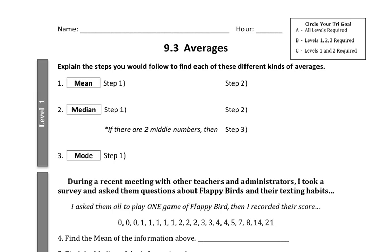What we're going to do now is we're going to try to model data using a single number. And depending on what the data is doing and what it looks like, we're going to get different numbers. There are different kinds of averages, or different ways to describe what's normal for your data. So there are three different kinds of averages that are often talked about: the mean, median, and mode.